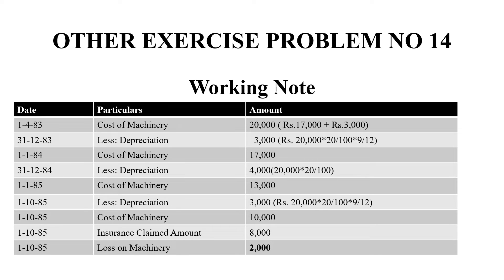In the year we use it fully, 20,000 into 20% is 4,000. So the balance is 13,000. That is the cost of the machinery on 1.1.85. At 1.1.85, the machinery has become damaged. So in 9 months, we calculate depreciation — that is 20,000 into 20/100 into 9/12, which is 3,000 rupees. After that, we will get 10,000 rupees as cost of machinery as on that date.